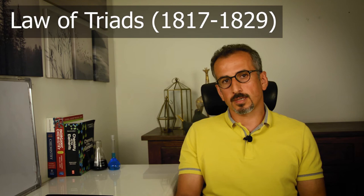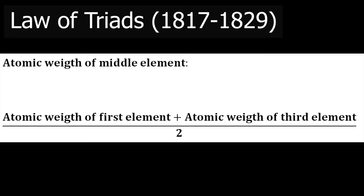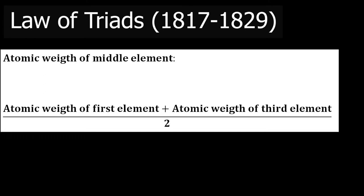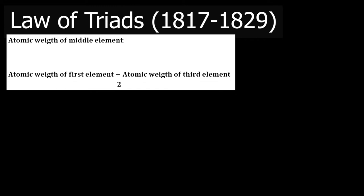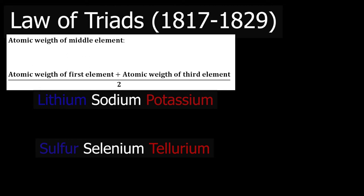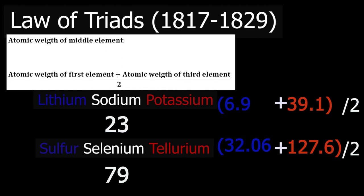Döbereiner made families of three elements in the order of increasing atomic weight, and his law was that the average atomic weight of the first element and the third one would equal the atomic weight of the middle one. For instance, he made triads of lithium, sodium, potassium; sulfur, selenium, tellurium; and calcium, strontium, barium. In each of his triads, if you sum the atomic weight of the first and third elements and divide by two, you get the atomic weight of the middle one. This was a great discovery at the time — the first arrangement of elements relating to periodicity in their properties, and it pinpointed atomic weight as the central property. But the problem was that it could not cover all of the discovered elements; it was valid for only some of them.